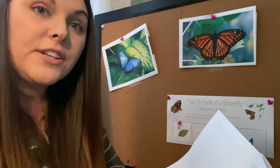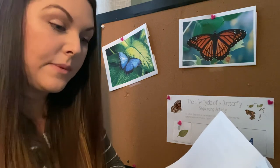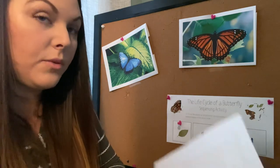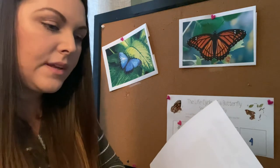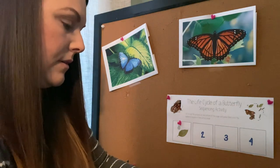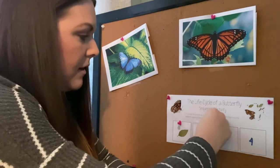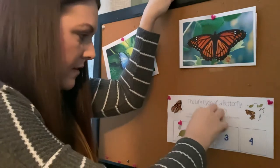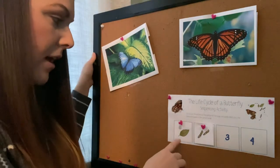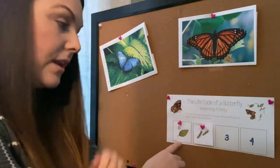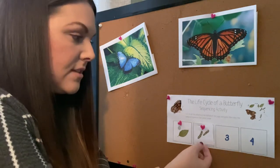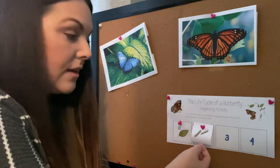Next, the egg hatches into a caterpillar, a type of larva. So there's another keyword: 'next.' So I'm going to put that in my number two spot. In the text, the author first told us that a butterfly lays eggs on a leaf and then next, or second, the egg hatches and then you see caterpillars.